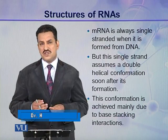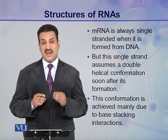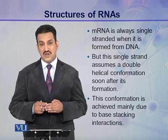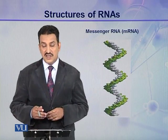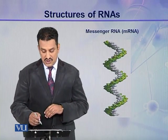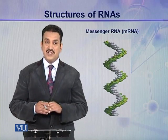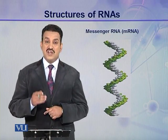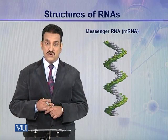Here the base stacking interaction is slightly different. The interaction between purine and purine is stronger as compared to the base stacking interaction between purine and pyrimidine or pyrimidine and pyrimidine. This is the helical structure assumed by a mRNA molecule. In this structure, the white line represents the nitrogenous bases while the green line represents the backbone consisting of ribose sugars and phosphoric acids. So this is a single stranded helical structure in contrast to the double helical structure of DNA.